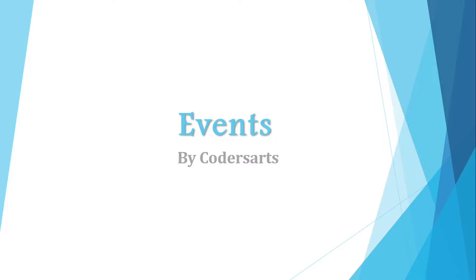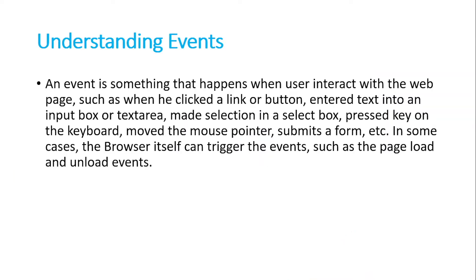In this video we will be understanding about events in JavaScript. Events are those actions which are performed when we click on something or hover over something. We have different categories of events. First of all, what is an event? An event is something that happens when a user interacts with the web page, such as clicking a link or a button, entering text into an input box or a text area, making a selection in a select box, or pressing a key on the keyboard.